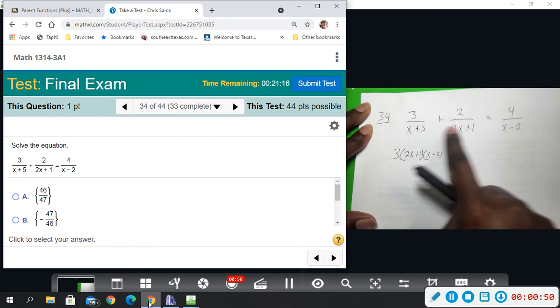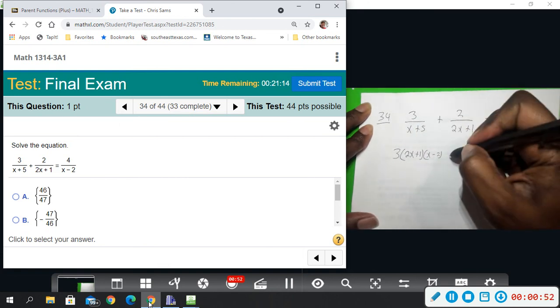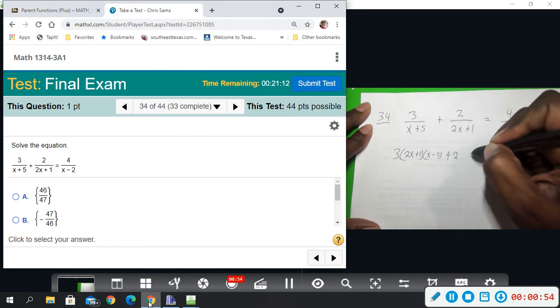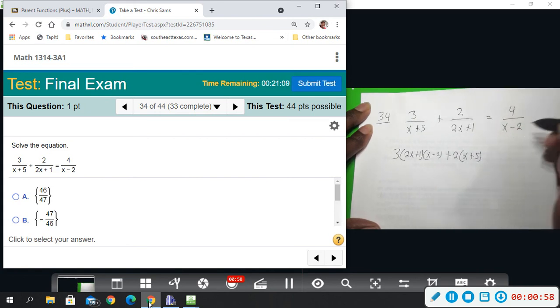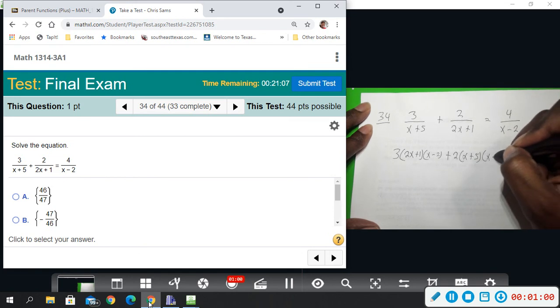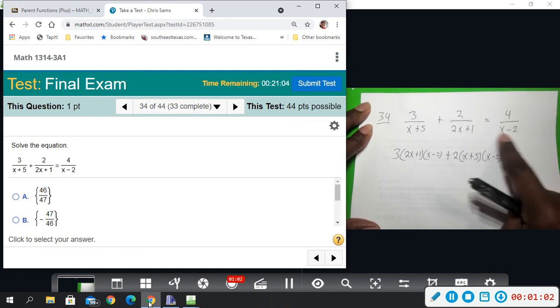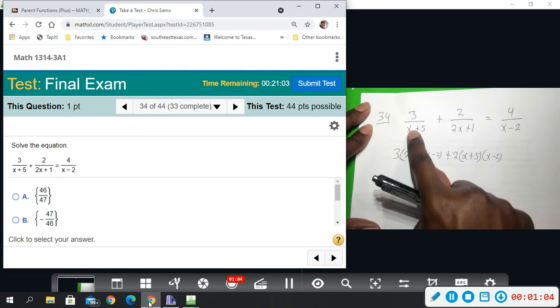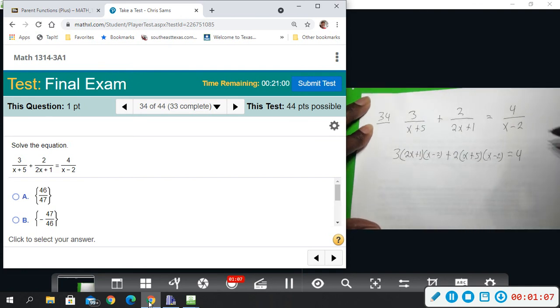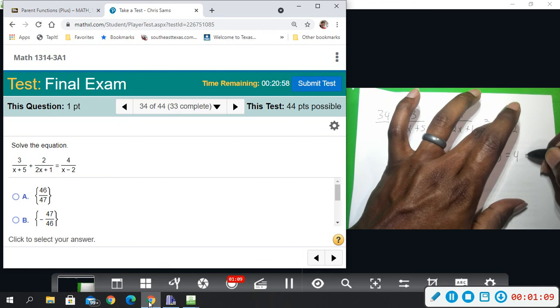And then the same thing over here will lose this one and pick up these, so equals x plus 5 times 2x plus 1.